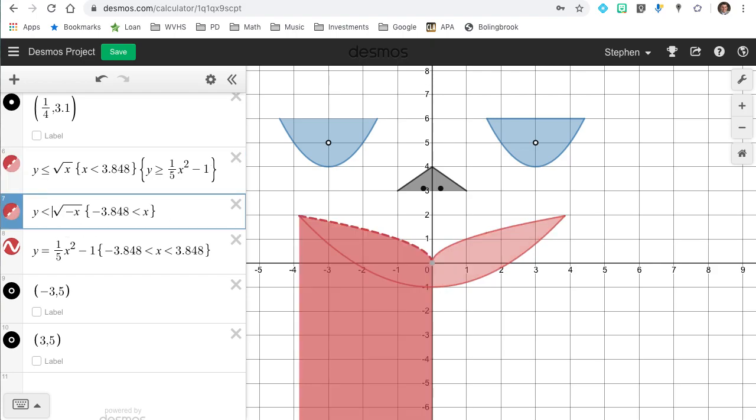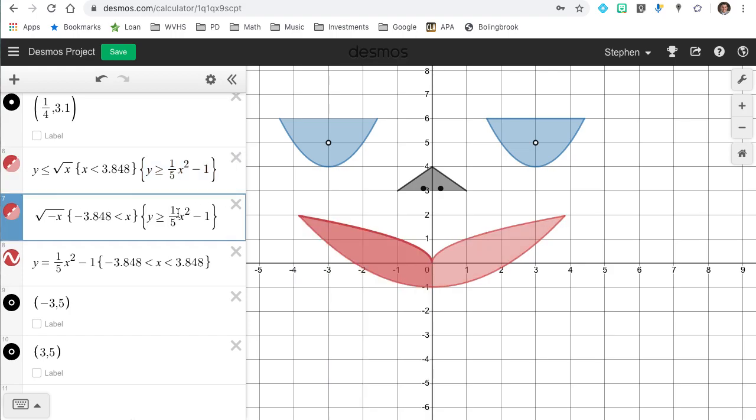So if I change that other square root to less than or equal to, you can see that I only have the one restriction. I want x to be less than, or sorry, x greater than this negative 3.848 where it intersected the parabola. But if I copy and paste that restriction from the other lip, now I've got it in both spots and I've shaded my lips. And now I've got a nice little face.